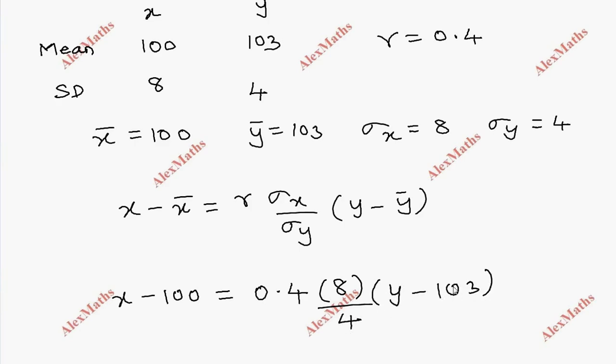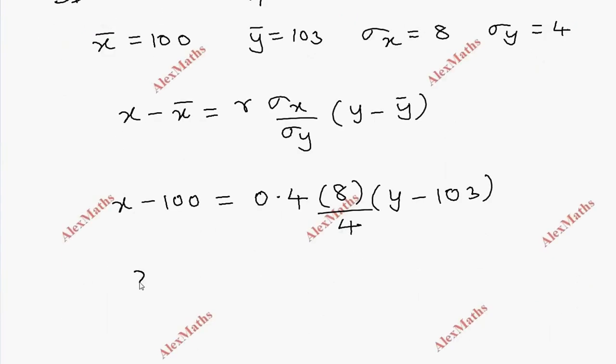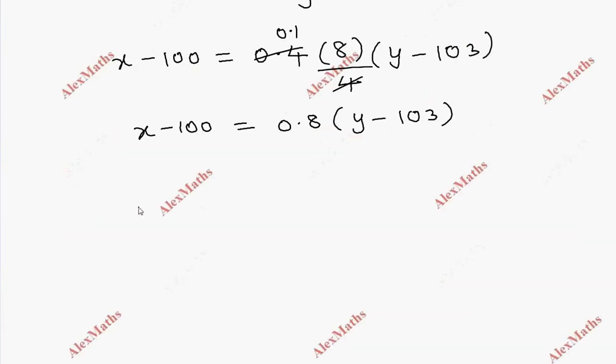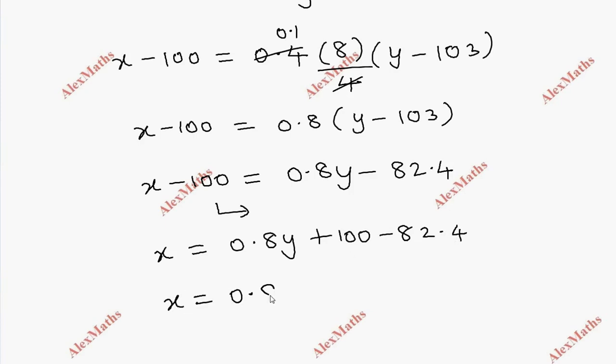Now with direct substitution, x minus 100 equal to 0.8 into y minus 103. So x minus 100 equal to 0.8y minus 82.4. Therefore x equal to 0.8y plus 100 minus 82.4. This equals 0.8y plus 17.6, which is the final answer.